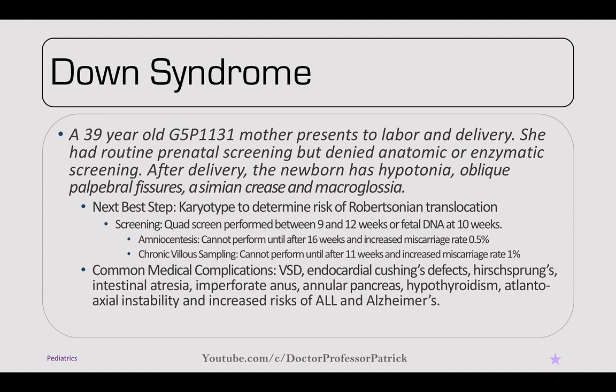Now we have a case of Down syndrome. A 39-year-old G5P1131 mother presents to labor and delivery. She's had routine prenatal screening and denied any anatomic or enzymatic screening. After delivery, the newborn has hypotonia, oblique palpebral fissures, a simian crease, and macroglossia — phenotypic characteristics of Down syndrome. This woman is at risk considering she's advanced gestational age at 39 years old.